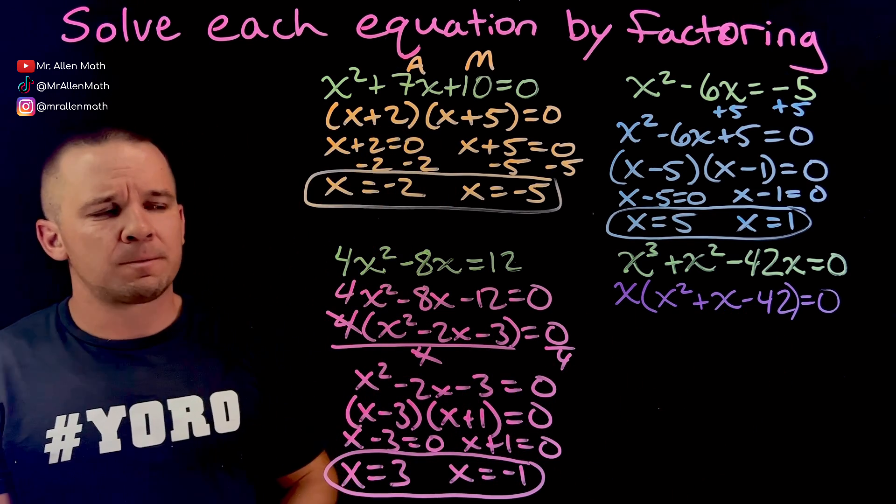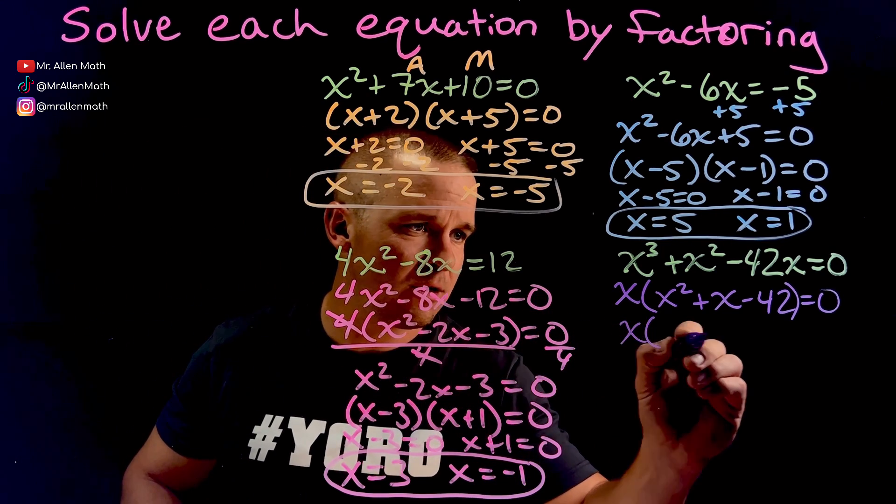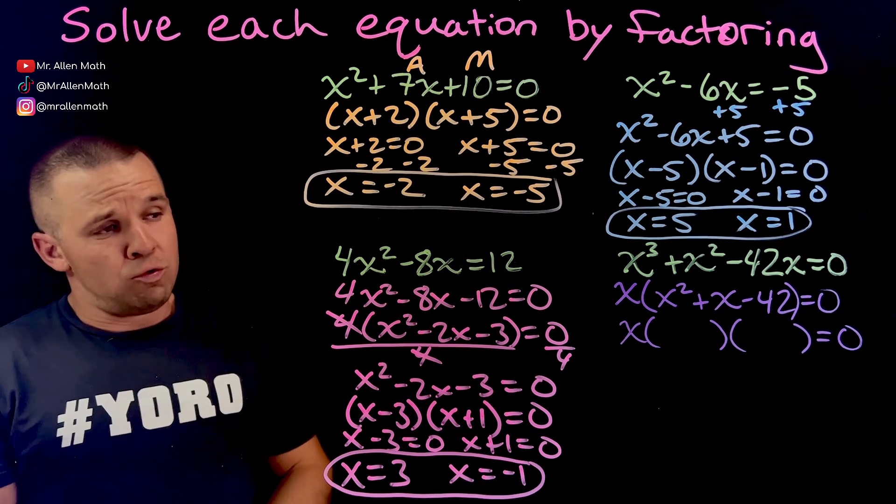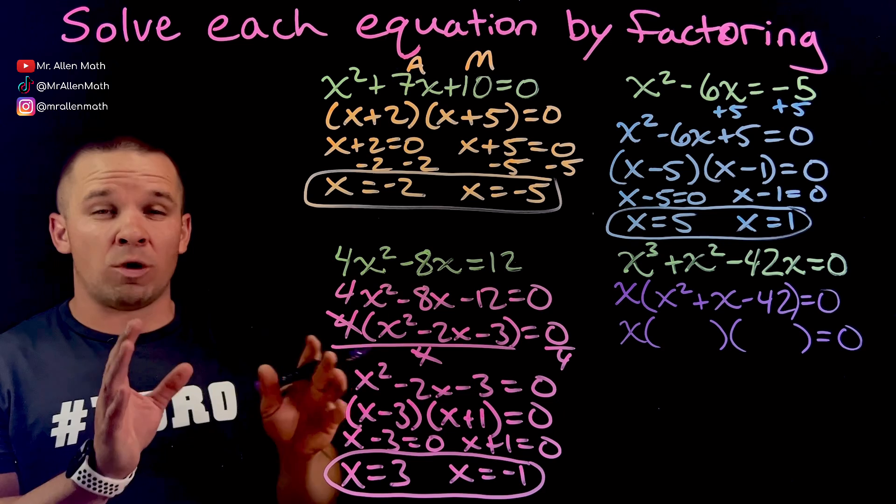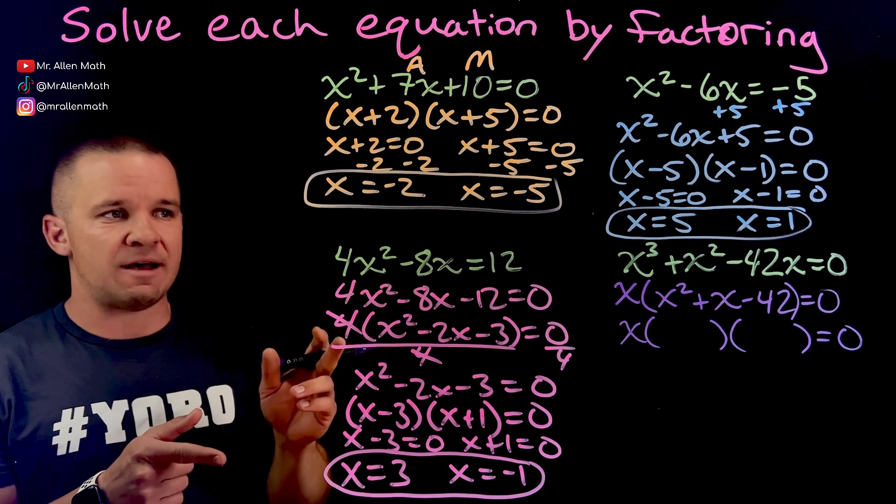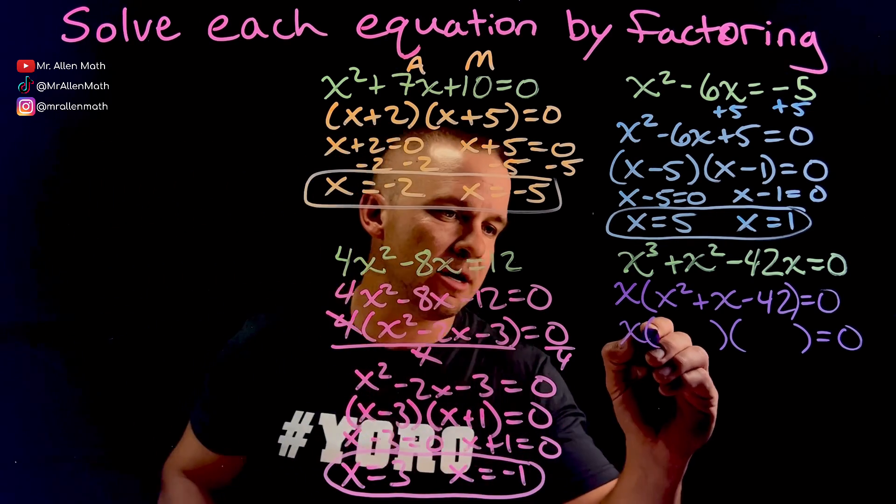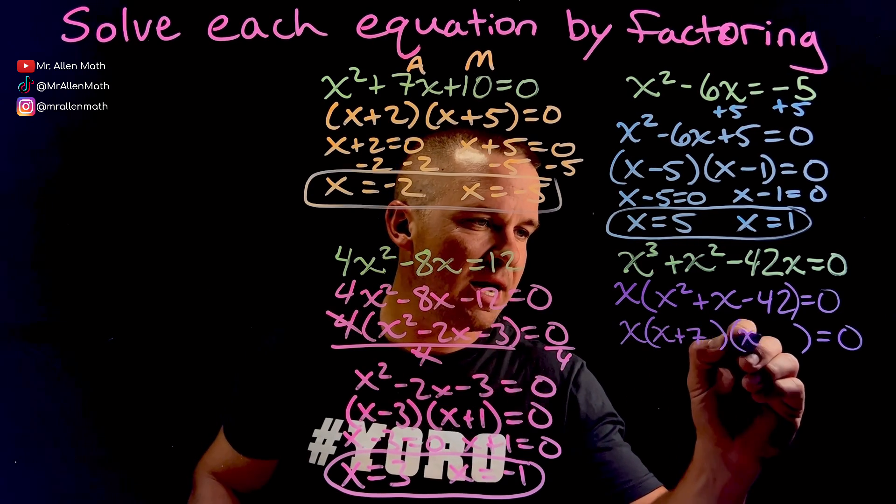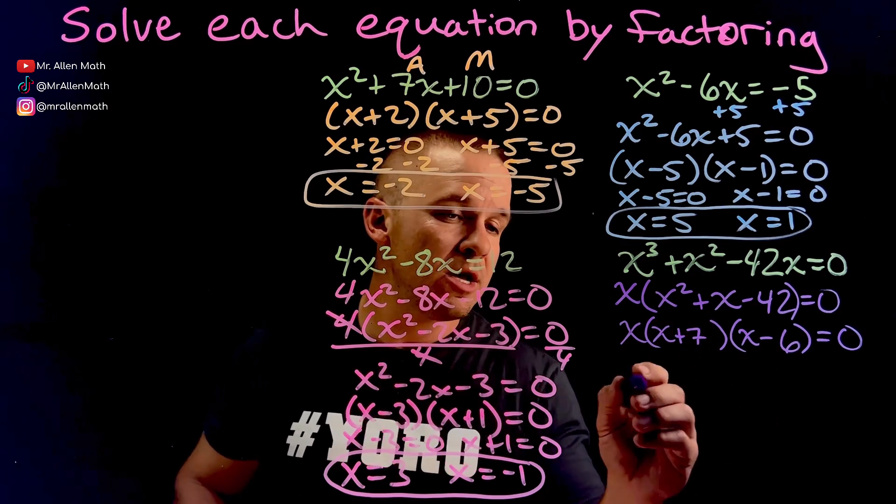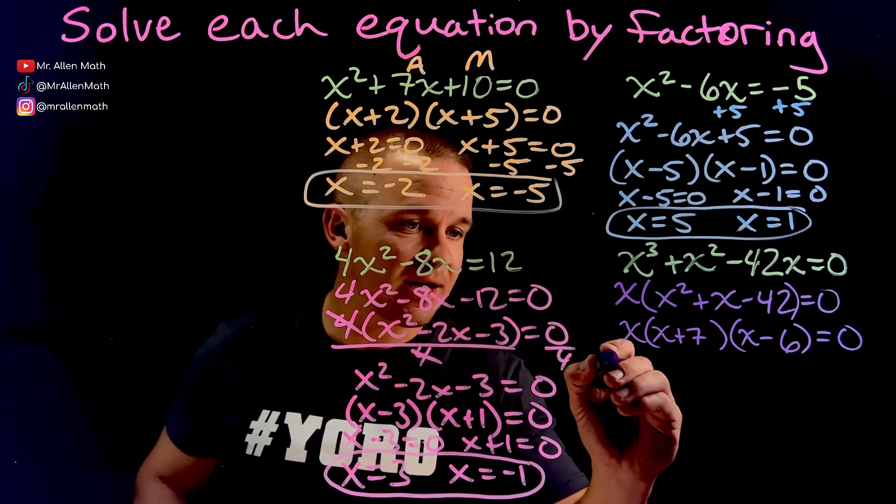Well, what multiplies to negative 42 and adds to 1? By the way, that X is just going to be chilling. So we're going to look like this. X, parentheses, parentheses, 0. That's what we're looking at. Numbers that multiply to 42. Negative 42. So they're going to need to be one apart. How about 6 and 7? Because positive 7 and negative 6 would add to 1. Positive 7, negative 6, multiplies to negative 42. That's it. So we got X plus 7, X minus 6. Had this been a negative X, these signs, once again, would be switched. So now I've got three different factors, three solutions. It's a cubic. That means I'm going to have three solutions.